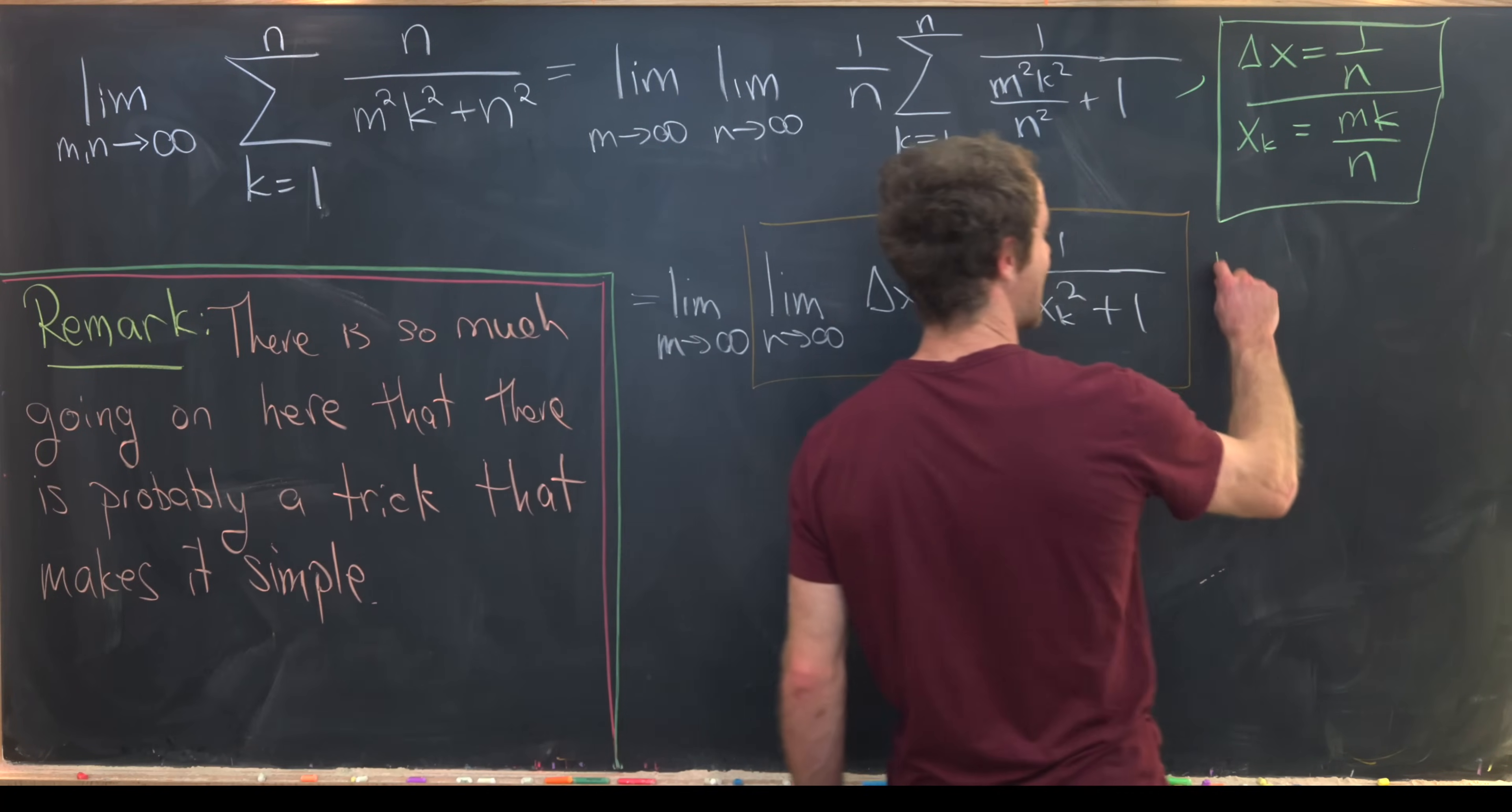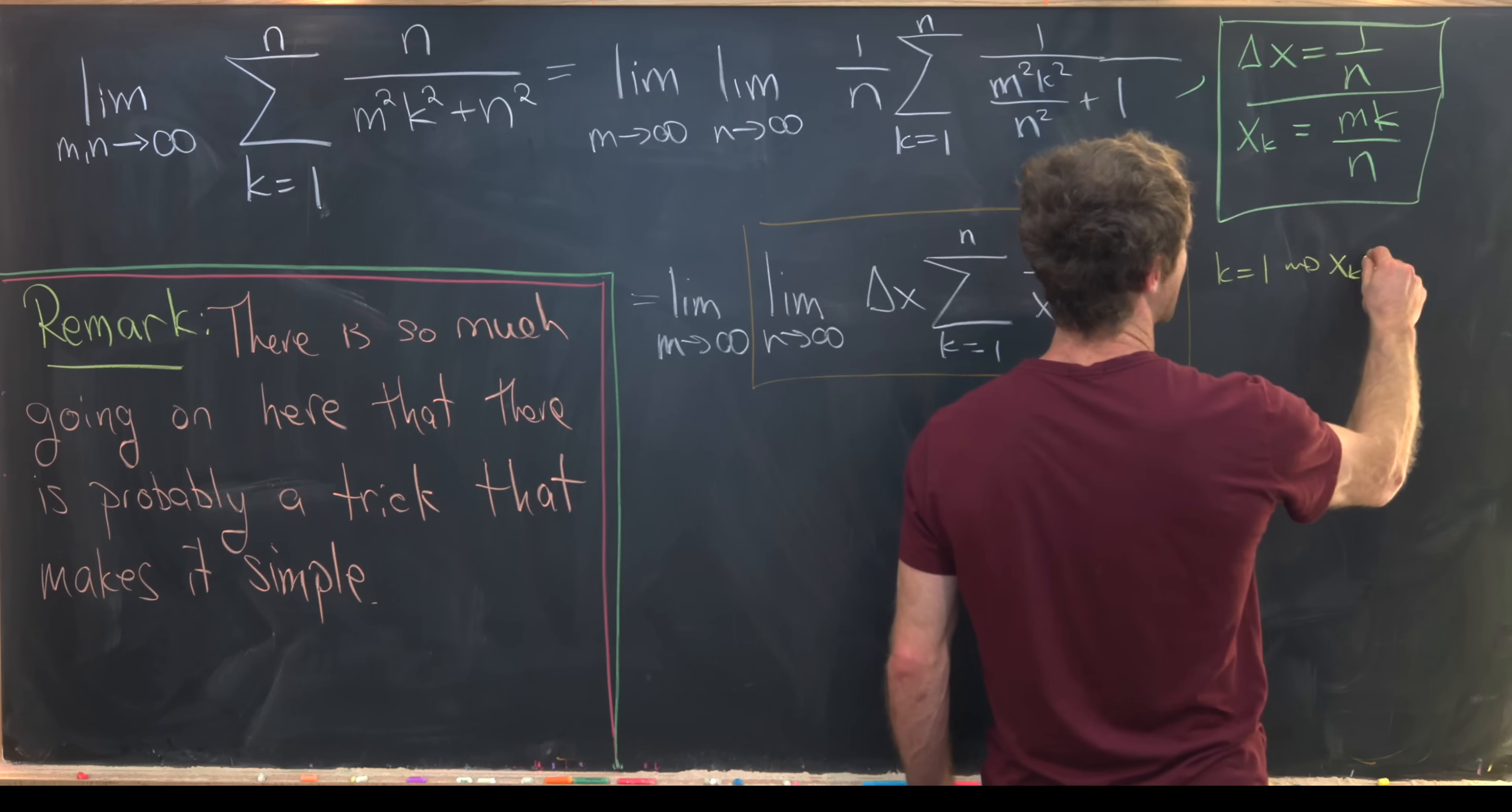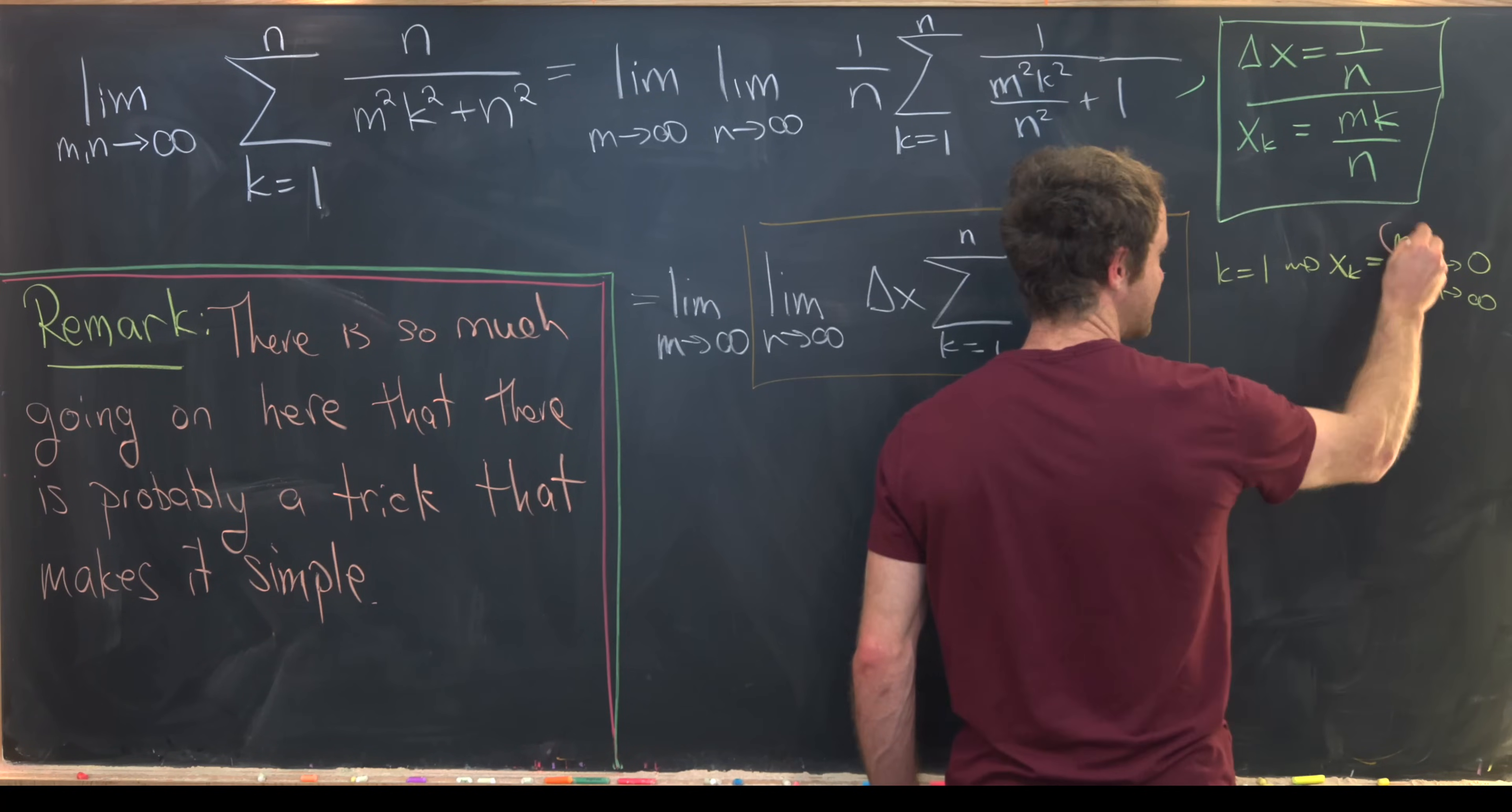Let's notice when k is equal to 1, that means x sub k is equal to m over n, but that's approaching 0 as n goes to infinity.